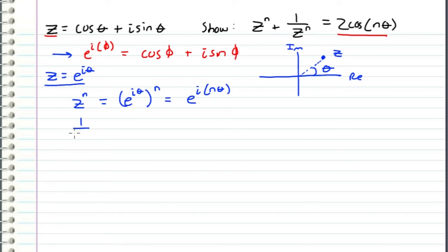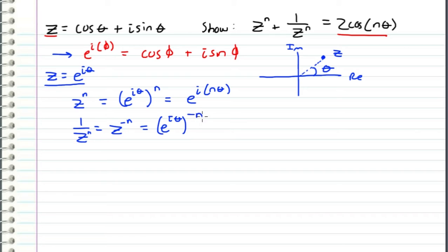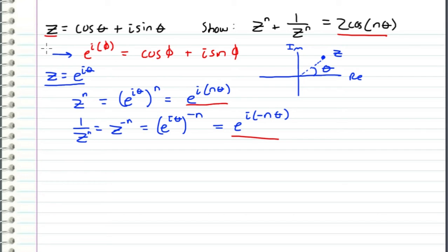Now we want to find an expression for one over z to the n. I can rewrite this as z to the negative nth power. So we take our polar form, e to the i theta, and raise it to the negative nth power. This gives us e to the i times negative n theta. Now let's take these two forms and plug them back into Euler's formula in order to turn them into cosines and sines again.